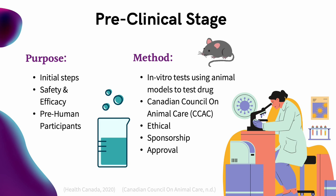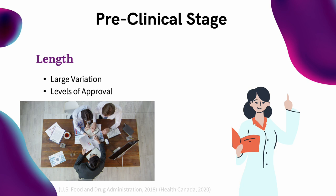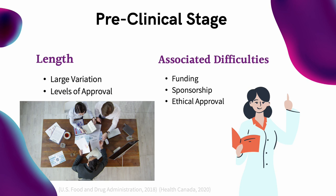At this stage, if the lab reaches some level of success, they typically acquire a sponsor who provides funding for a trial and applies to Health Canada for approval. Sponsors may be organizations who benefit from the success of the trials. The length of this phase has a large variation because many levels of approval are needed in order to proceed. Some of the difficulties associated with this stage are funding, sponsorship, and ethical approval.